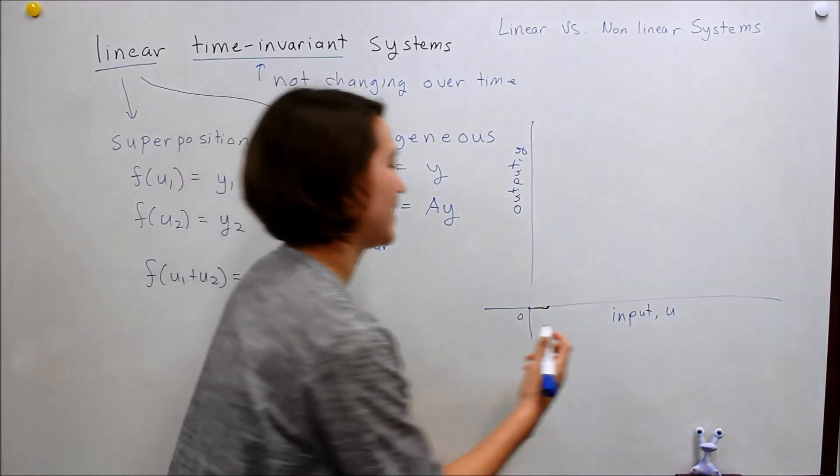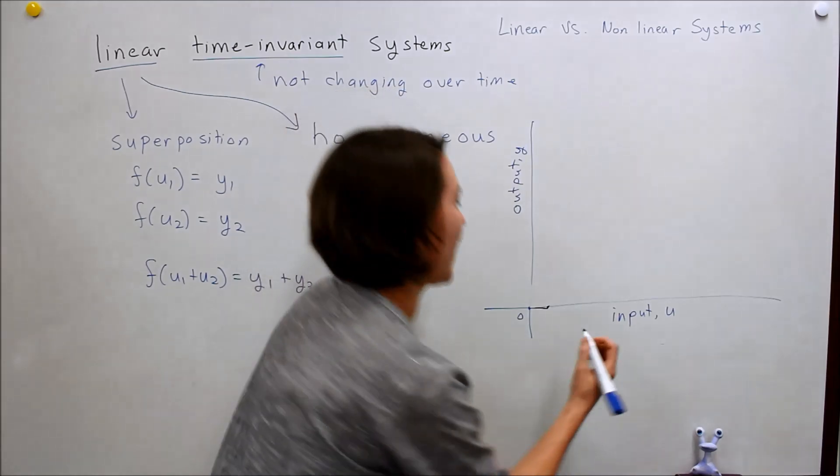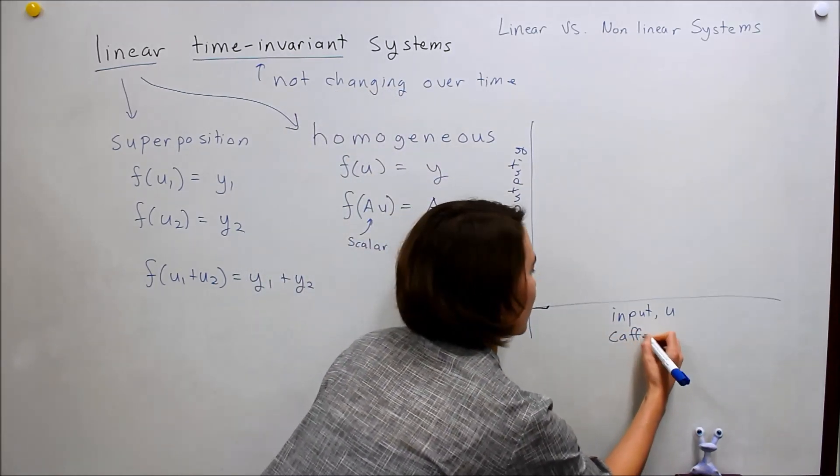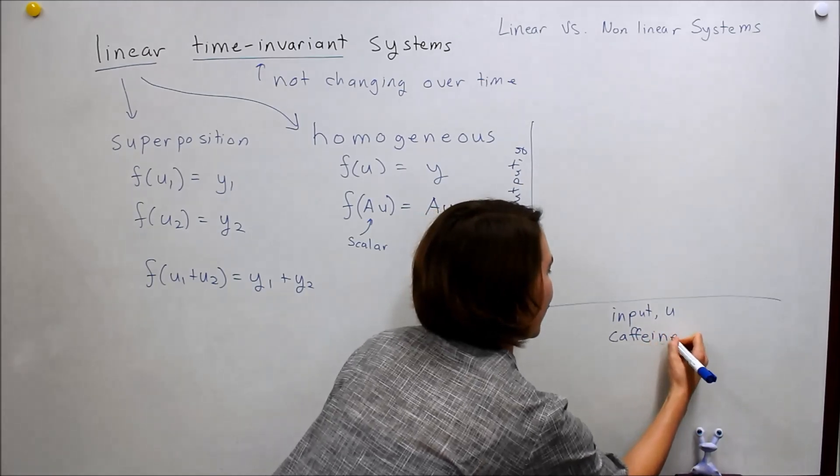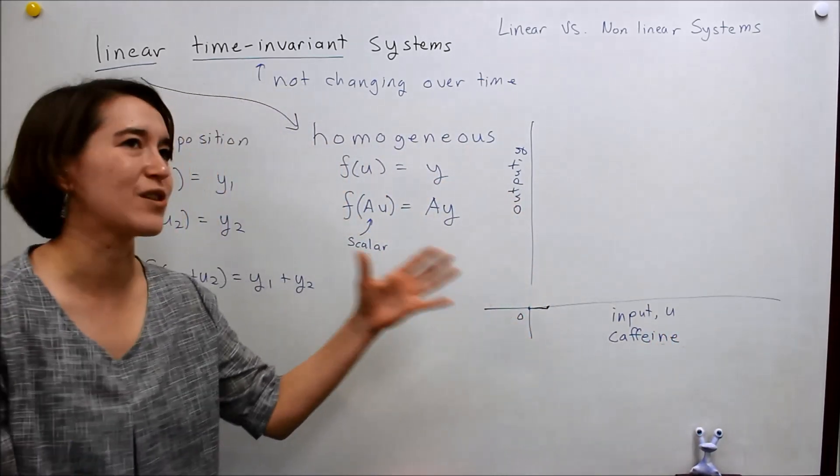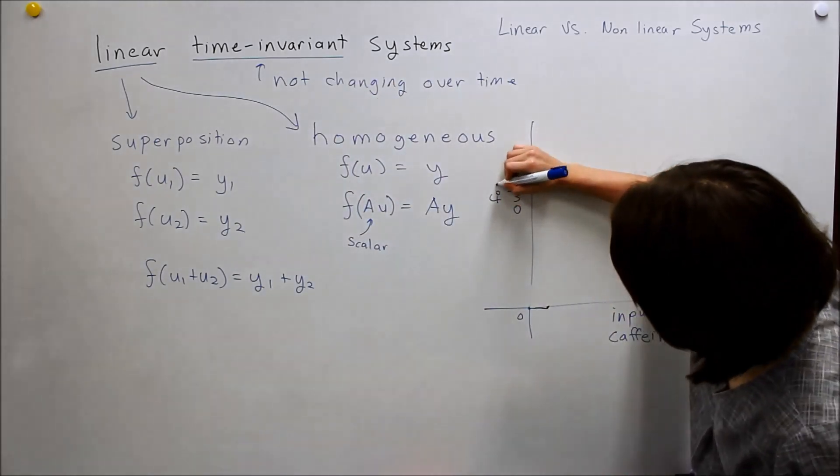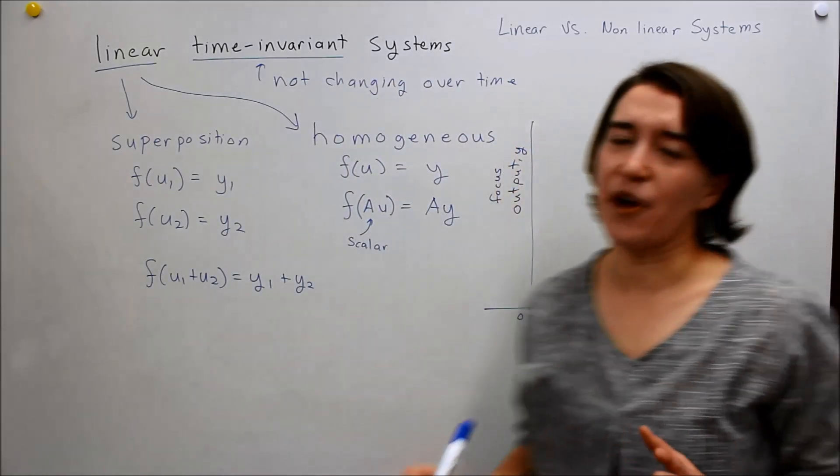Alright. Let's say the input is the amount of caffeine you've had to stay awake to do all of your schoolwork. Okay? So, the amount of caffeine is your input, and your ability to focus is your output.